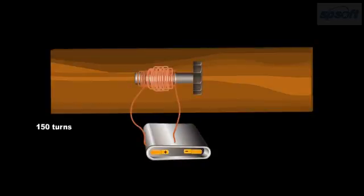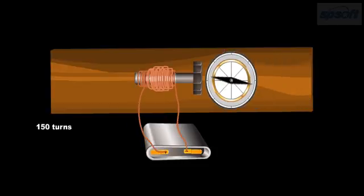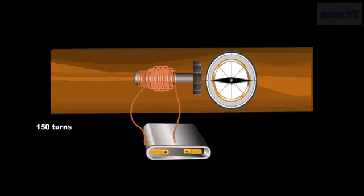Similarly, the strength of the magnetic field also increases with the increase of electric current. This is the reason why the deflection of the magnetic needle with one cell each time is less than the deflection obtained with two cells.